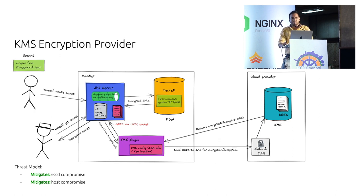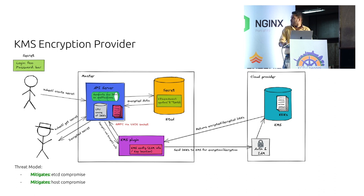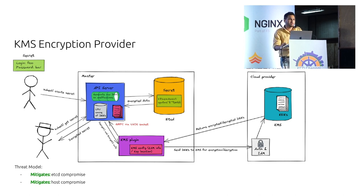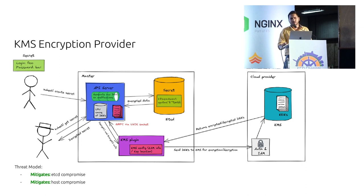Let's dive deep into what happens when we use Kubernetes KMS, and I'll walk you through a demo. At a high level there is the API server, etcd, and in between them a new agent called the KMS plugin. The KMS plugin's job is to talk to the KMS provider and ensure keys are encrypted and decrypted when the API server needs it. Communication happens over a gRPC connection. You would typically run the plugin as a static pod or on the host itself. The API server needs a unique socket to communicate with the plugin for encryption and decryption calls.